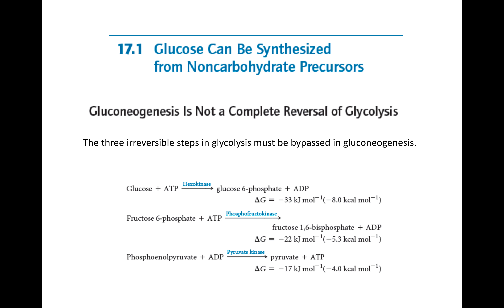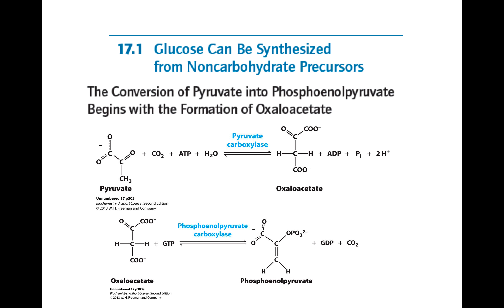There are three reactions we have to overcome, and if you look at the Delta G values, it should not be a surprise why. We need to overcome the hexokinase reaction, the phosphofructokinase reaction, and the pyruvate kinase reaction. The reason gluconeogenesis is not simply a reversal of glycolysis is that it would be too endergonic to do so.